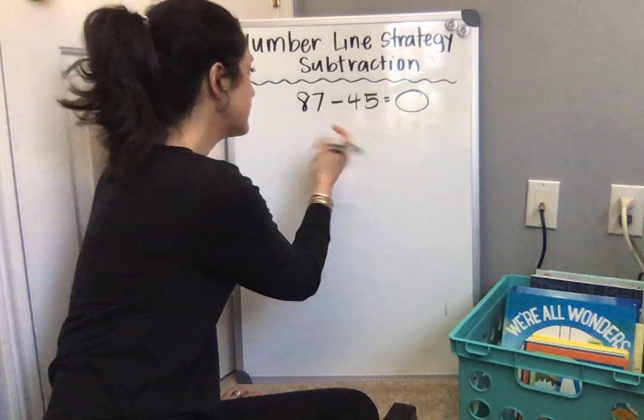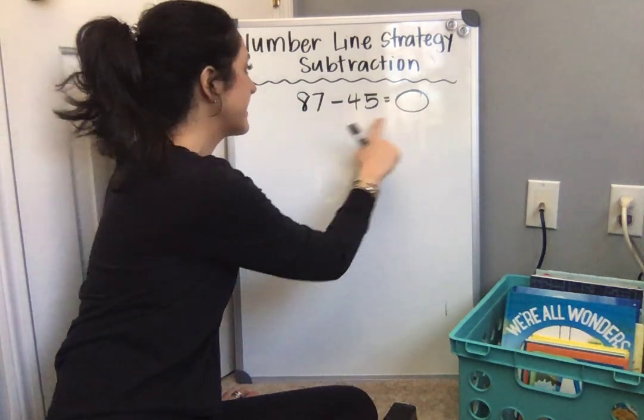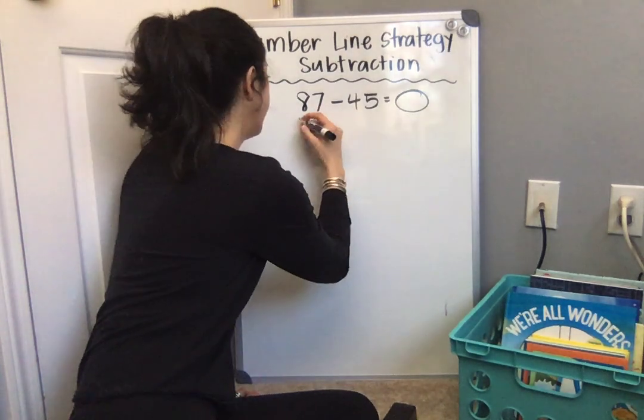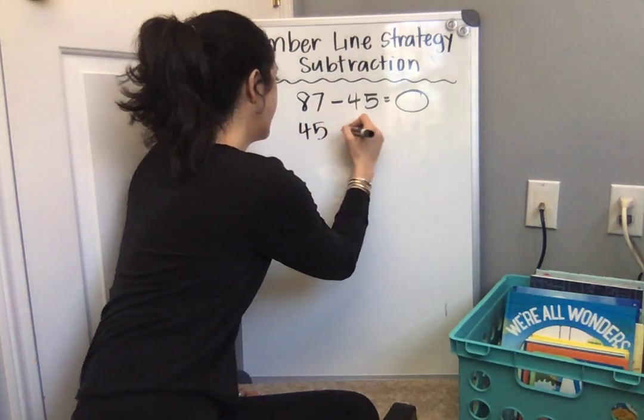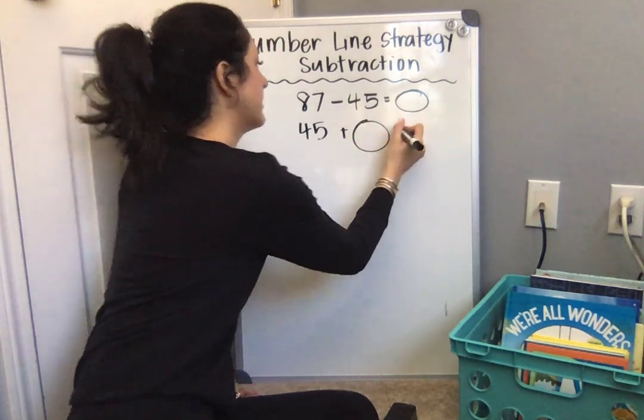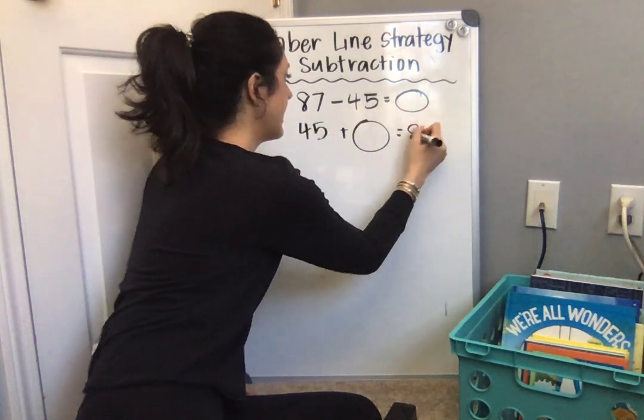So I switch it around. When I switch around an equation, I take these two numbers and add them together. So 45 plus, we don't know this number yet, so plus something, change unknown, equals our bigger number, 87.